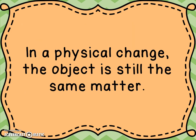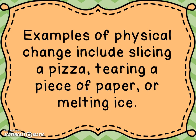In a physical change, the object is still the same matter — nothing new is made. We're just changing something about that particular object. Examples of physical change include slicing a pizza, because there we're changing the shape of the pizza, or tearing a piece of paper, where we're changing the size.